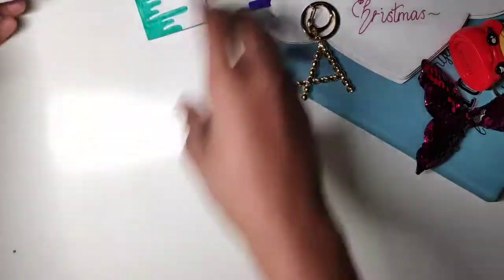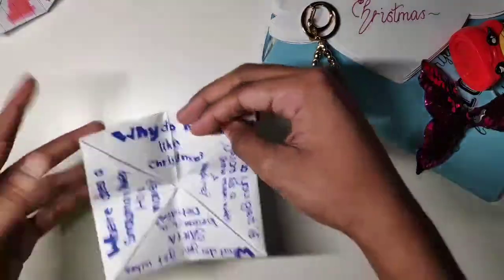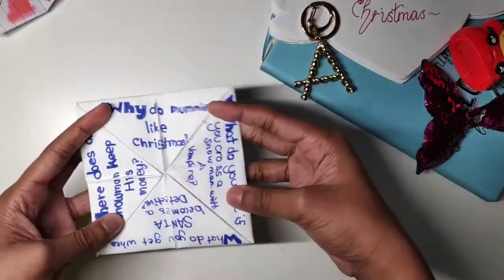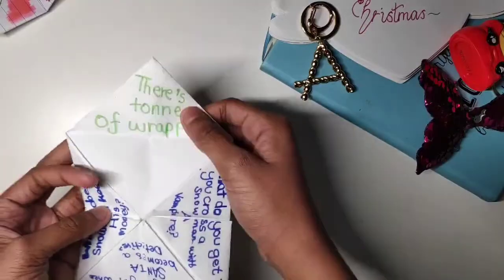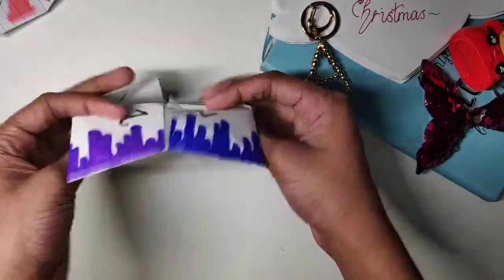For example, for Christmas that is coming up, we have this Christmas joke chatterboxes, like 'Why does the mummy like Christmas? Because it's tons of wrapping.' So it's basically like that. You can do it anything, anyhow, but you have to have the basic shape, so let's get started with that.